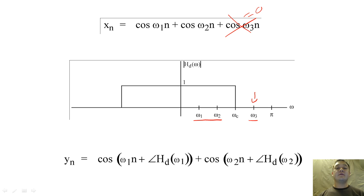But how does the phase affect the output? For an ideal low-pass filter, y[n] would equal cos(ω₁n) + cos(ω₂n). More generally, we want our ideal low-pass filter to have zero phase for all frequencies.